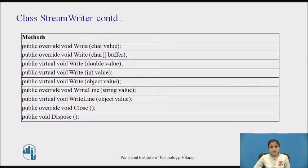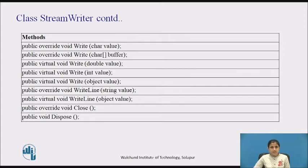Now let's see the methods of the StreamWriter class. There are various overloaded versions of the Write method. The Write method with a char parameter writes a character to the stream. The Write method with a character array as a parameter writes a character array to the stream. The Write method where the parameter is an 8-byte floating point value writes the text representation of that value to the text stream. The Write method where the parameter is a 4-byte signed integer writes the text representation of that integer to the text stream.